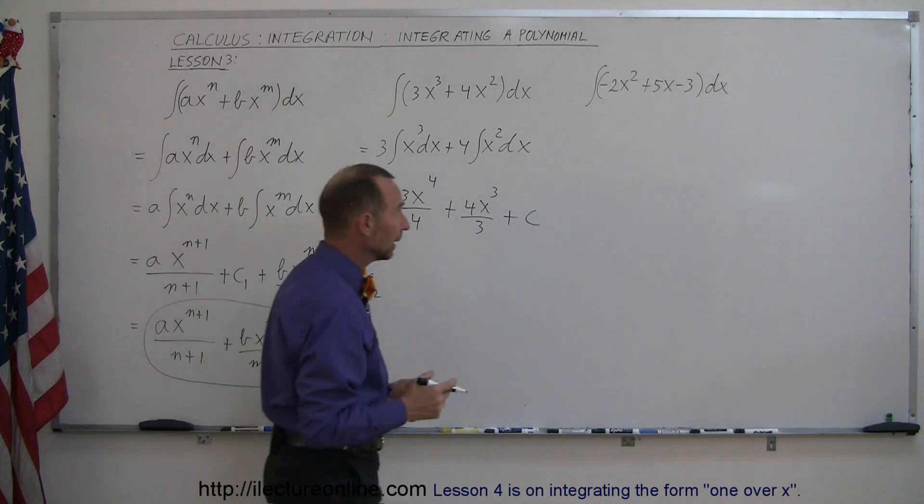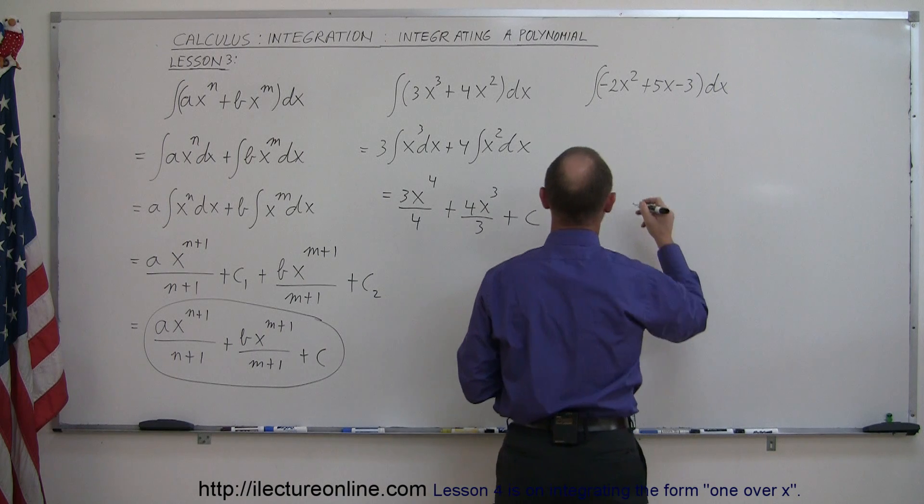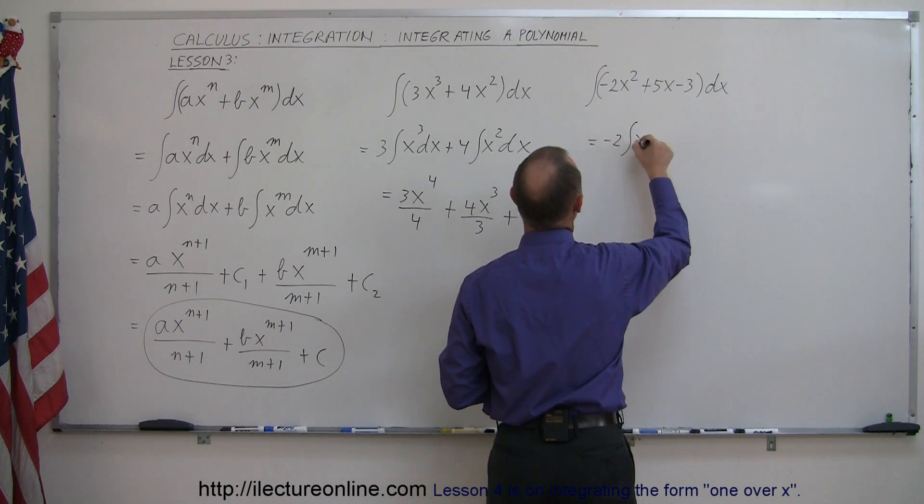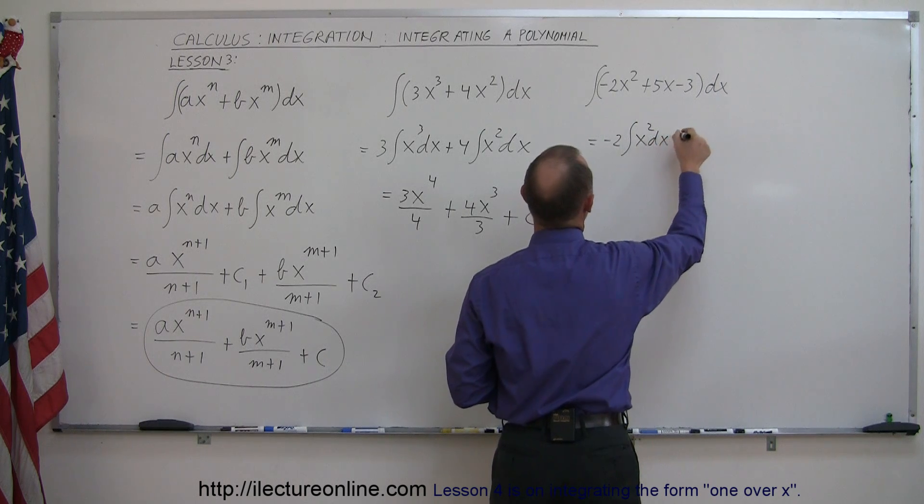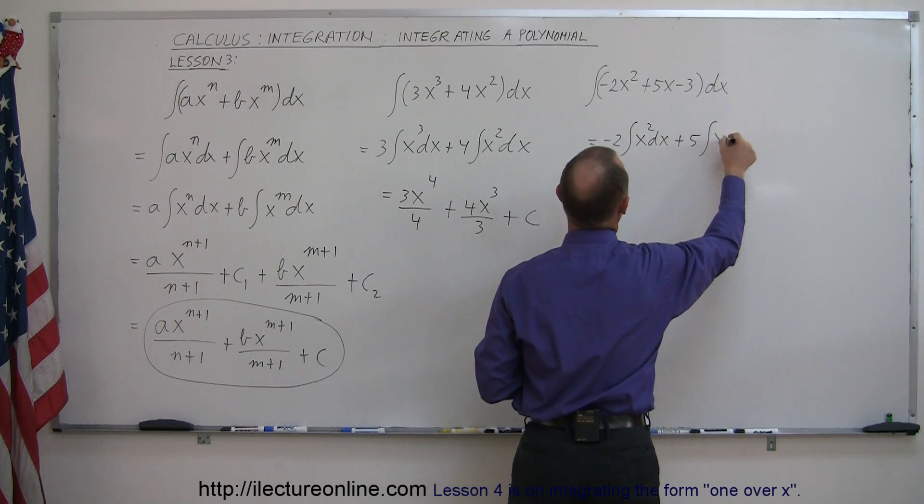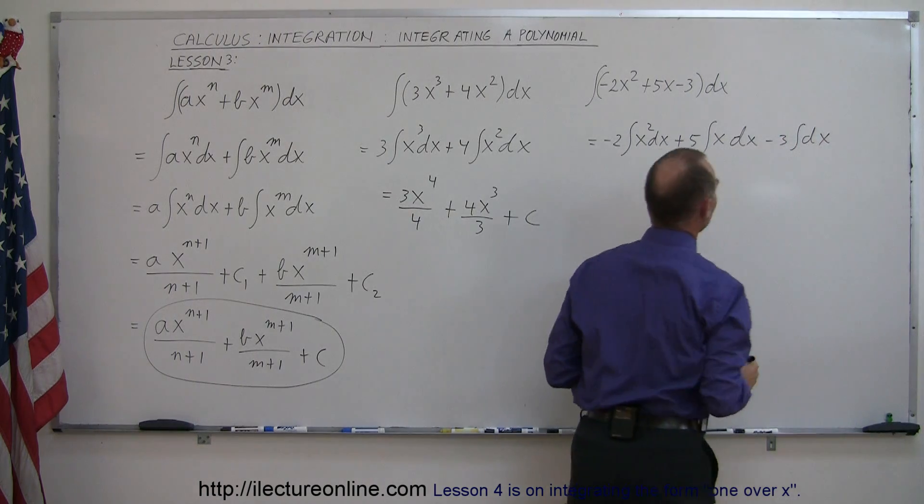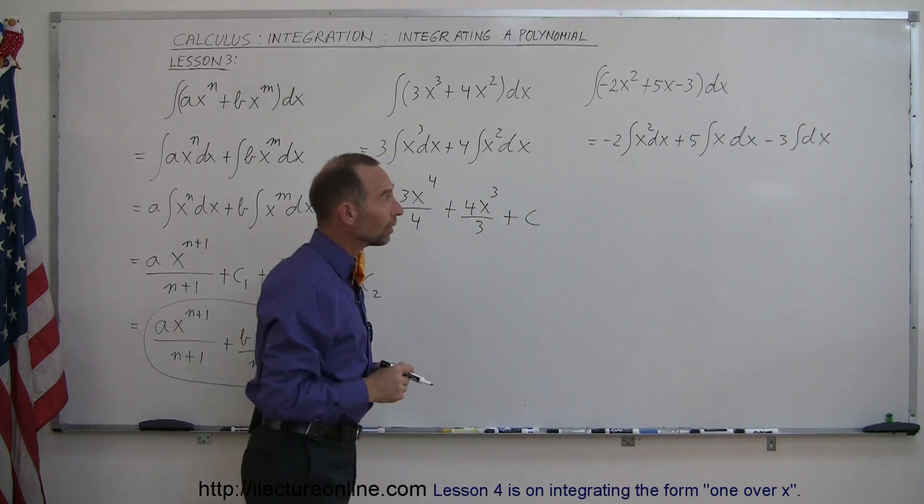For another example, it doesn't matter if the negative sign is there. This is equal to minus 2 times the integral of x squared dx, plus 5 times the integral of x dx, and minus 3 times the integral of dx.